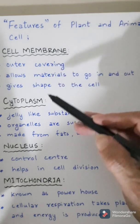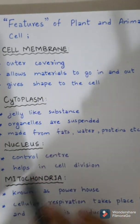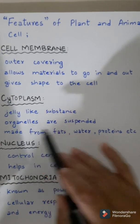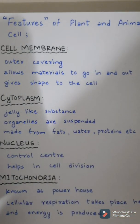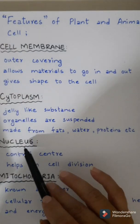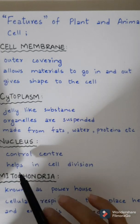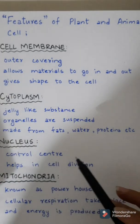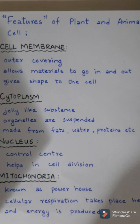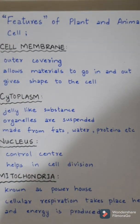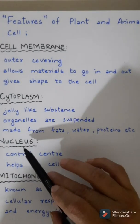Cytoplasm: inside the cell membrane there is a jelly-like substance called cytoplasm. All the organelles are suspended in cytoplasm. The smaller parts of the cell are called organelles. In the middle of the cell there is a nucleus. Nucleus is known as the control center of the cell because it controls all the processes taking place inside the cell and helps in cell division. Have you ever heard the word DNA? DNA means deoxyribonucleic acid. It is responsible for carrying the hereditary material from the parents to the offspring. This DNA is present in the nucleus of the cell.